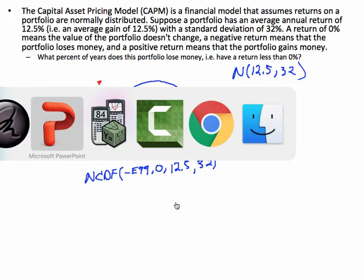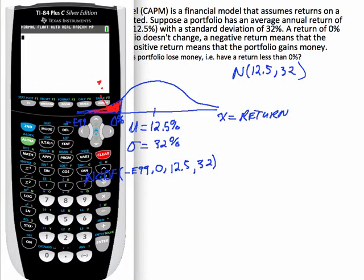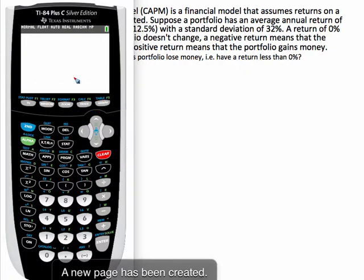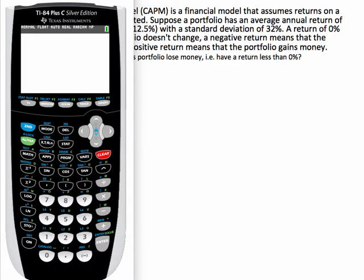So let's go grab our calculator here. If we grab the calculator and put those numbers in, go 2nd, VARS to get to distribution, go to normal CDF, which is option number 2. I'm going to put in a negative 2nd comma to get the E99. Our upper point is going to be at 0. Our mean was 12.5, and our standard deviation was 32.